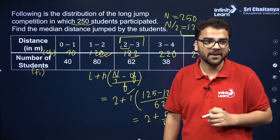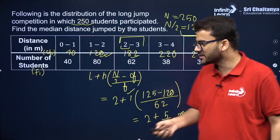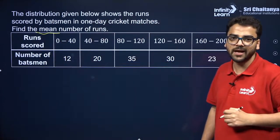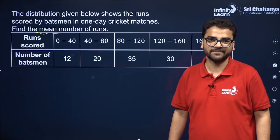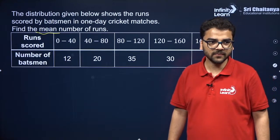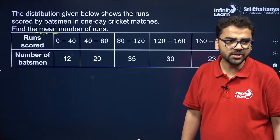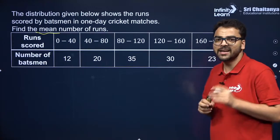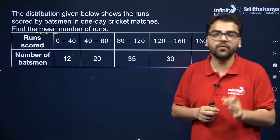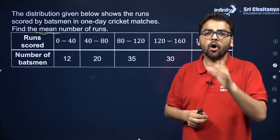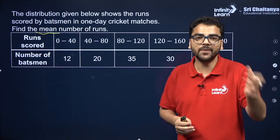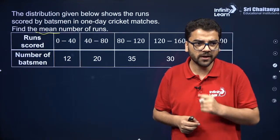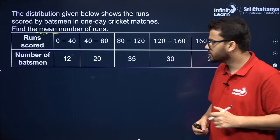Let us take the next question. You have to find the mean number of runs — that means find the mean. I would recommend using the assumed mean method. Although the step deviation method is not in the syllabus, if it were I would recommend that too because it saves calculation time.